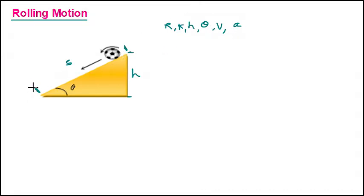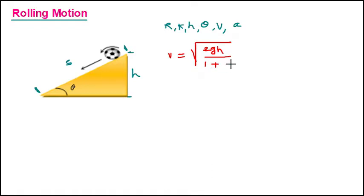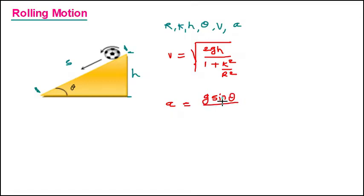The final velocity at the bottom is given by: V = √(2gh / (1 + k²/r²)). The acceleration equation is: a = g sinθ / (1 + k²/r²). These are the two key equations for a rolling object.